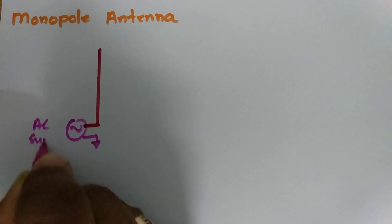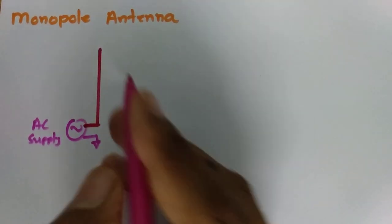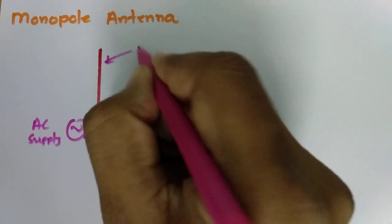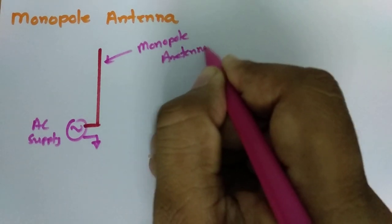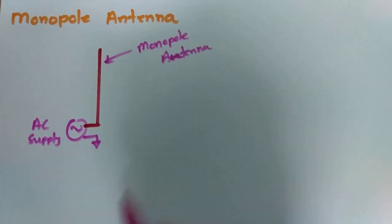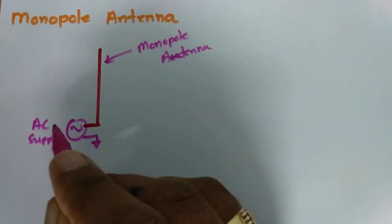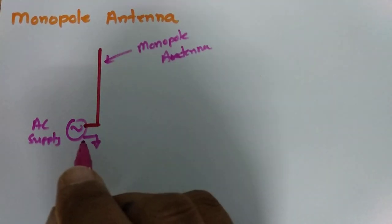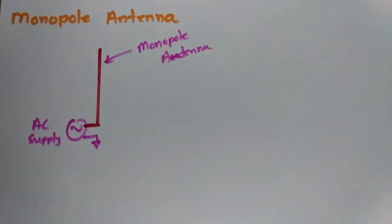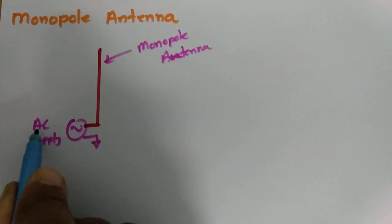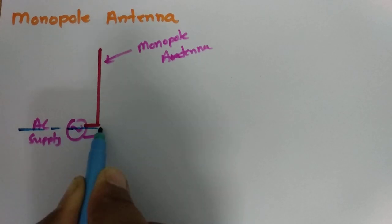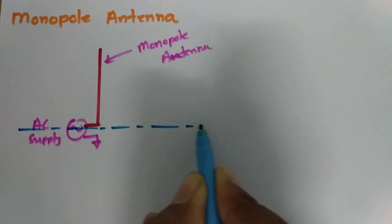The AC supply that we are connecting to this monopole antenna — so there is only a single pole, and when we feed this monopole antenna, we feed it with respect to ground. Now what happens is when we feed this monopole antenna with respect to ground, there will be a virtual ground that gets generated.